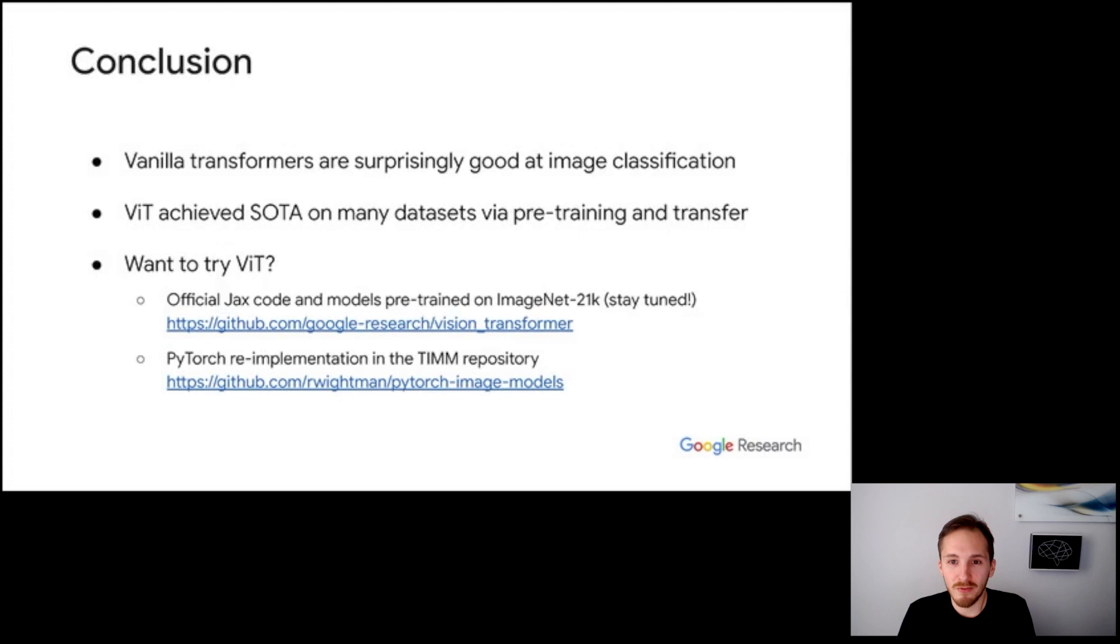To conclude, we have found that transformers are surprisingly good at image classification, especially if trained at scale. And using transfer learning, our vision transformers achieved state-of-the-art results on multiple popular benchmarks. If you'd like to try ViT, our official code as well as pre-trained models are released, and we're adding new better models as they're coming along. So stay tuned. There are also several implementations of ViT. For instance, this PyTorch implementation in the timm repository is nice. That's it from our side. Thanks for your attention and we're happy to answer any questions you may have.